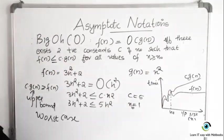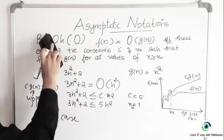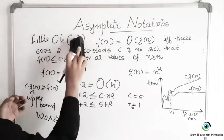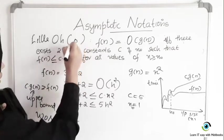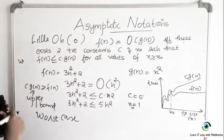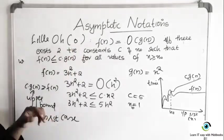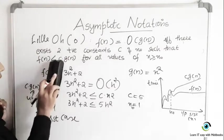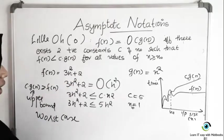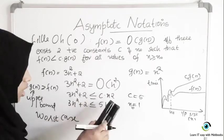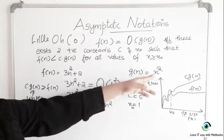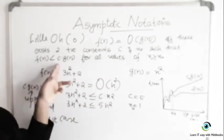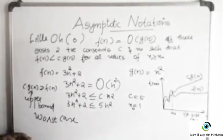We also have the loose bound, which is Little o, denoted by the small letter o. Little Omega was denoted by the small letter omega. The only difference for Little o is that F of N is strictly less than C times G of N. So in this case you may even take N cube or N to the 4 for G of N, because the only condition is F of N must be strictly less than C times G of N — it is a loose bound.